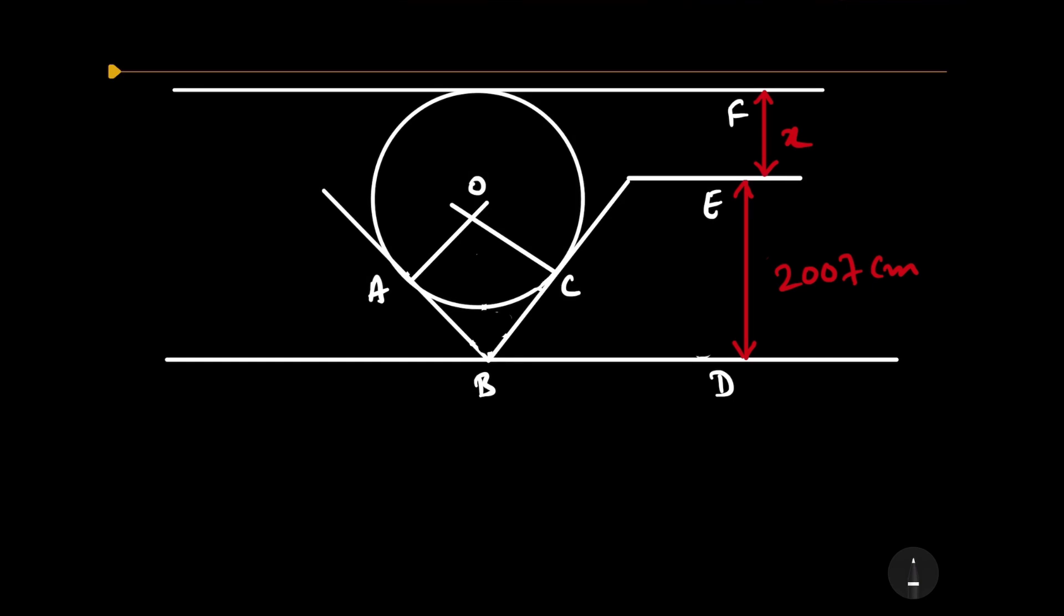As line AB is a tangent, then this angle will be equal to 90 degrees. And line BC is tangent to the circle, then this angle will be equal to 90 degrees.